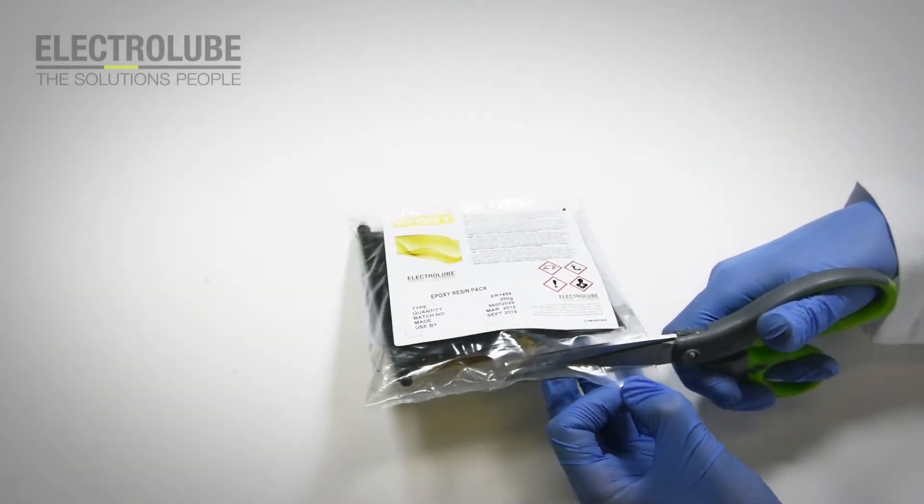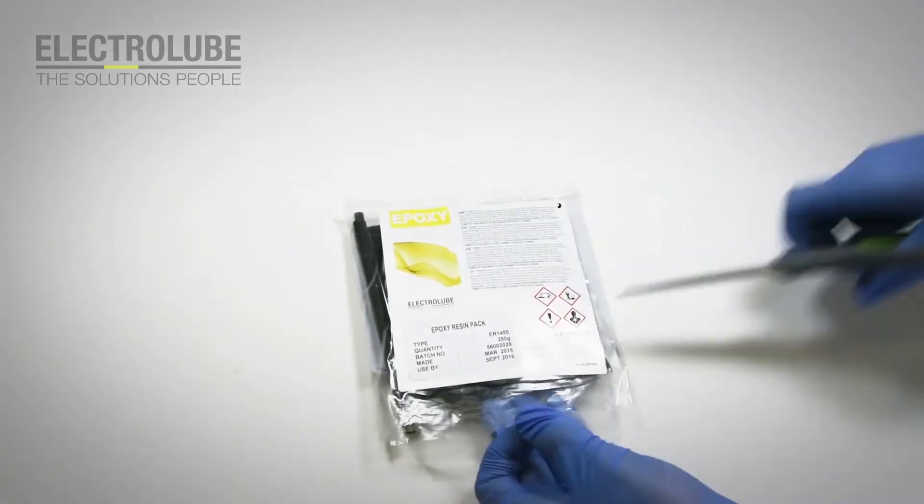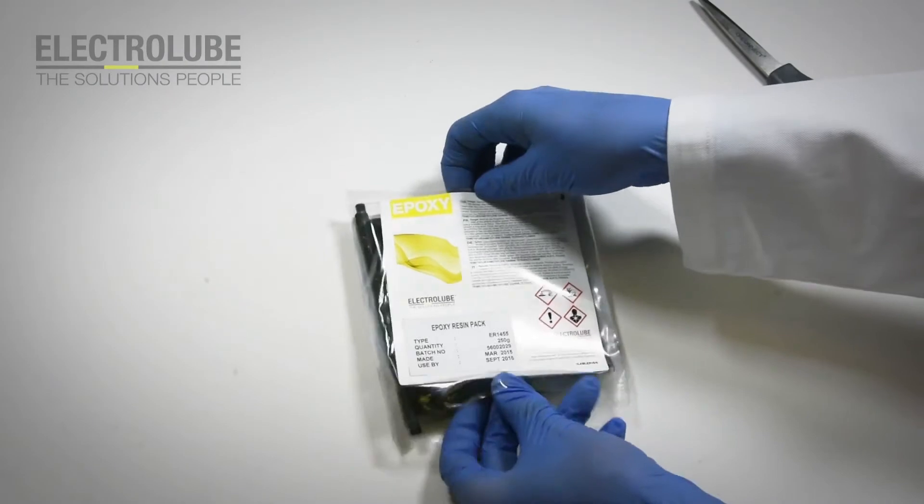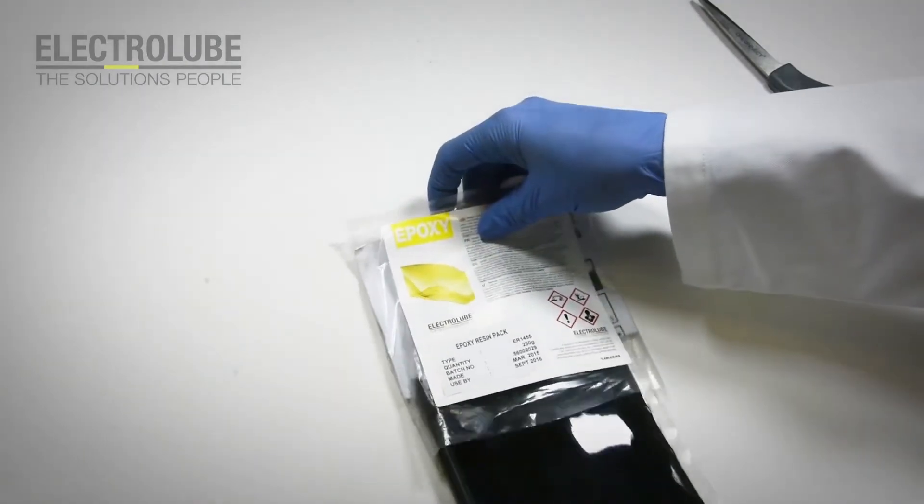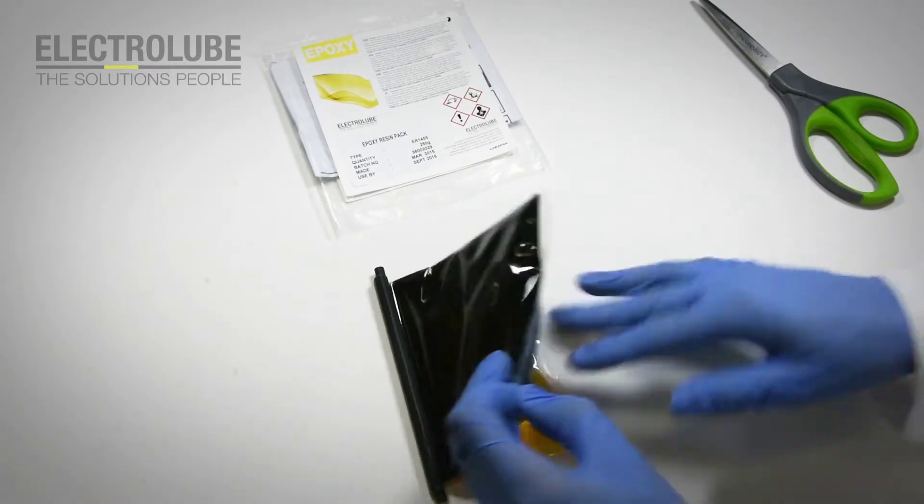Electrolube Epoxy resins are available in a variety of pack sizes and come in pre-measured quantities ready to mix. In this example video we are using a 250g resin pack which has a mix ratio of 2.5 to 1.